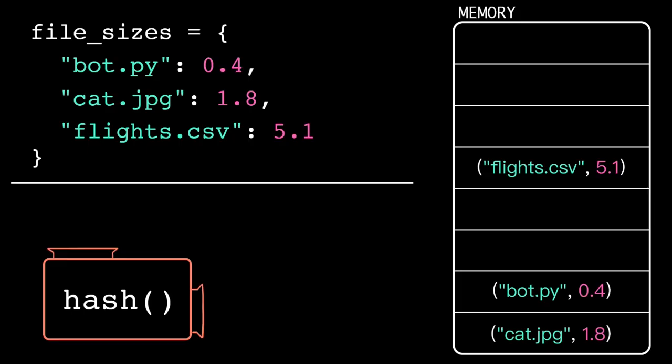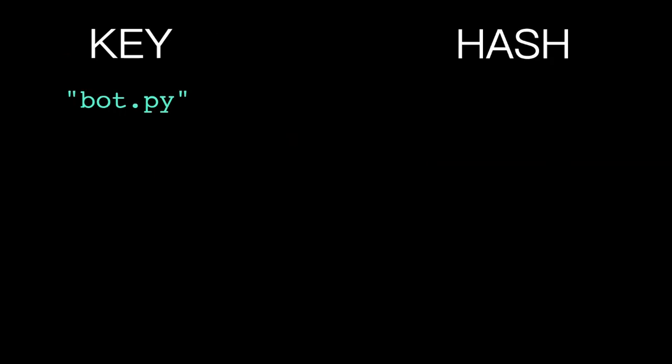The computer uses a function that converts each key to a deterministic integer, and then it uses that integer as an index into the list. We call this a hash table and the function a hash function. A hash function can be implemented using many different algorithms.